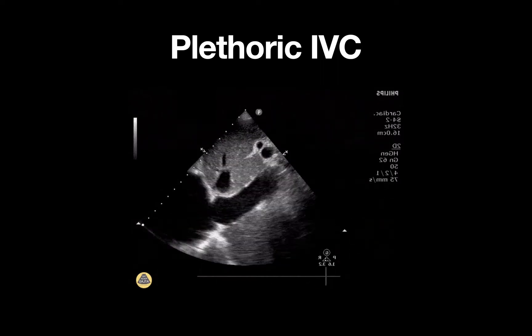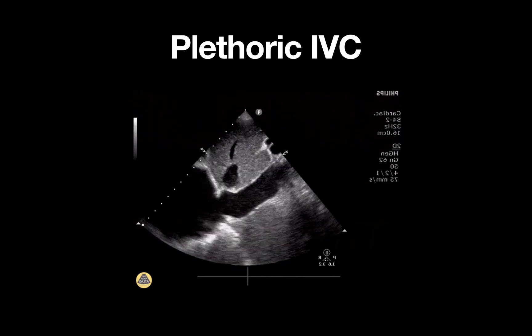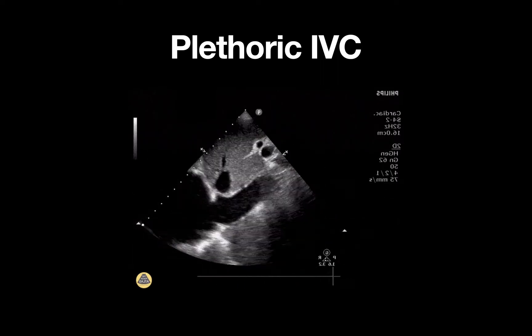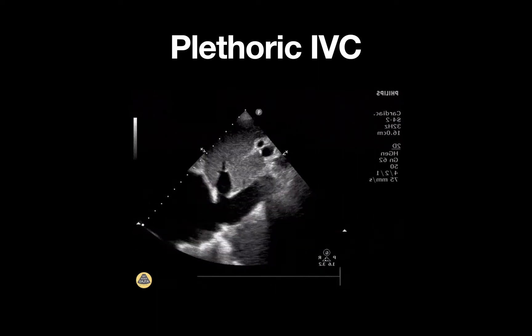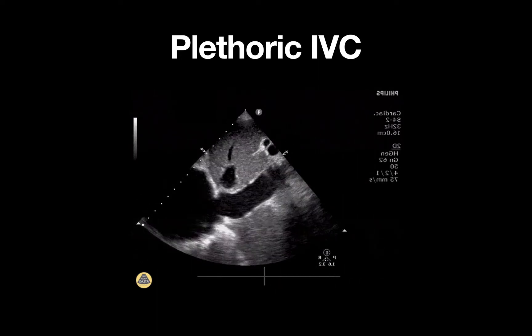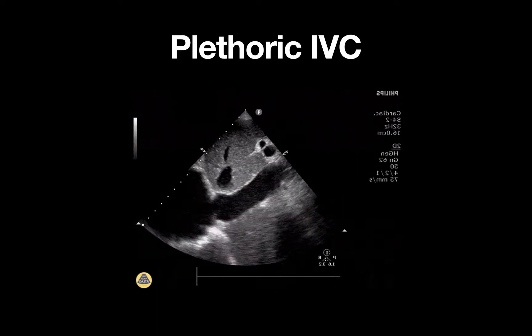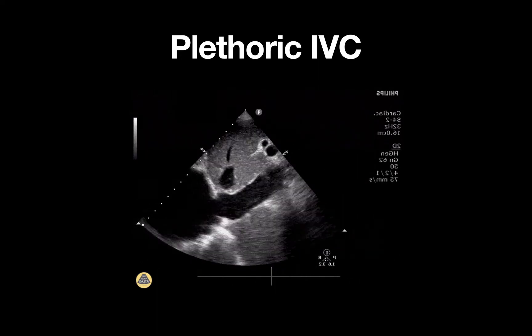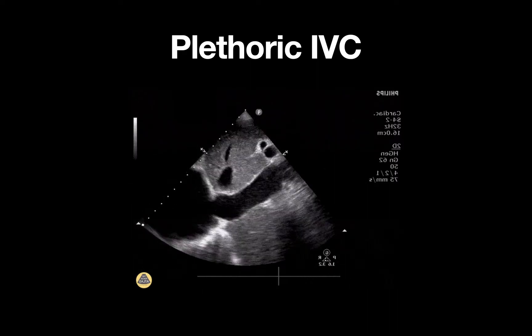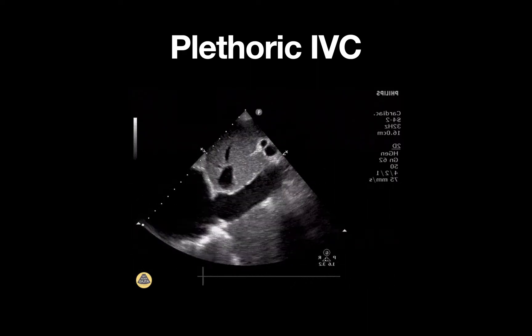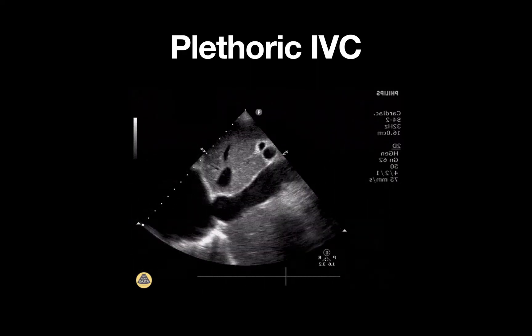This is an ultrasound clip demonstrating a plethoric IVC. A phased array probe is used and placed in the subcostal region just to the right of the patient's midline, with the probe marker pointed towards the patient's feet.